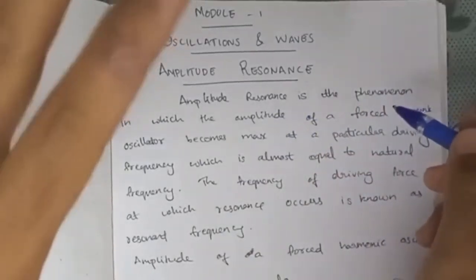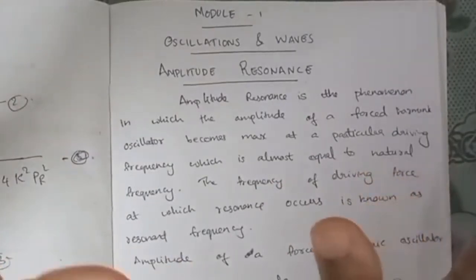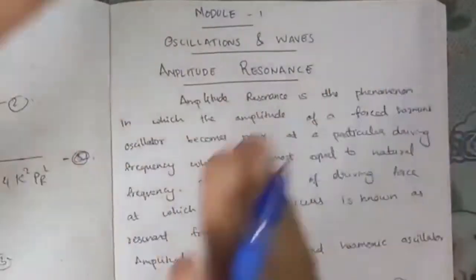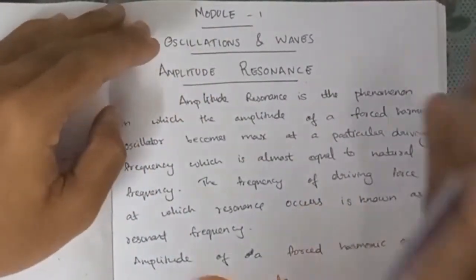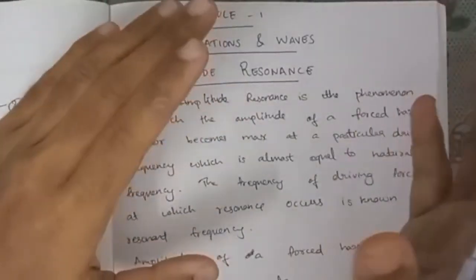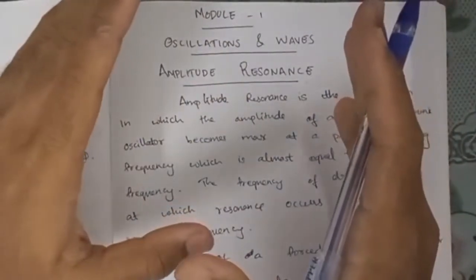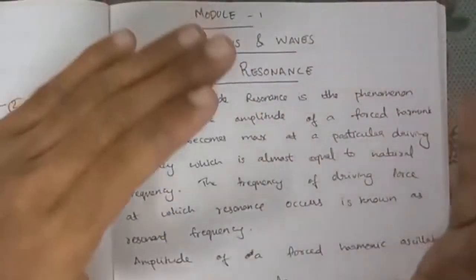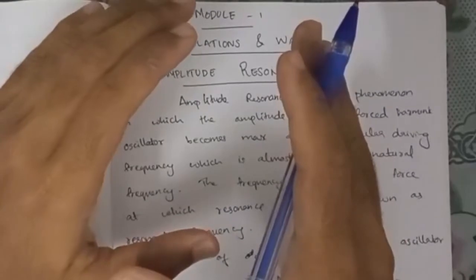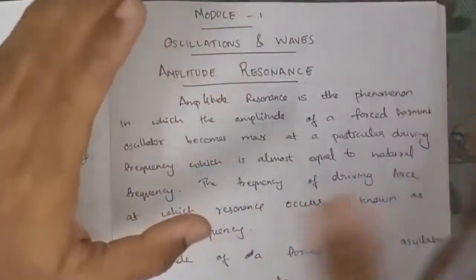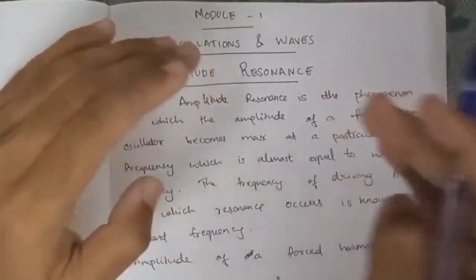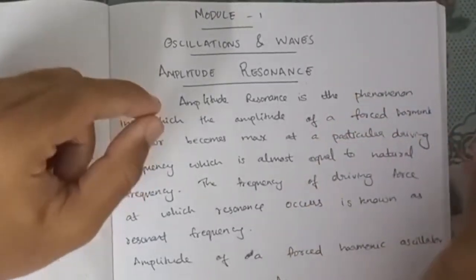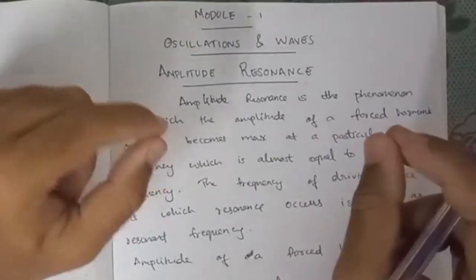Amplitude Resonance is the phenomenon in a forced harmonic oscillator where the amplitude is maximum at a particular driving frequency. At this particular driving frequency, when the amplitude of a forced harmonic oscillator becomes maximum, that phenomenon is called Amplitude Resonance.